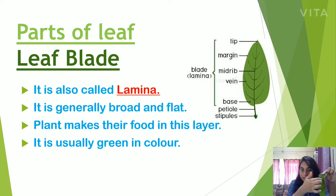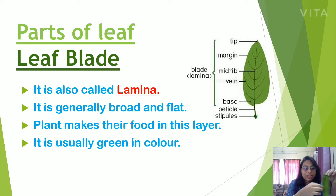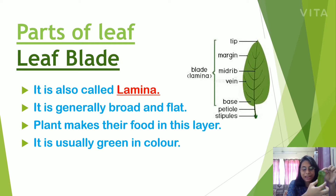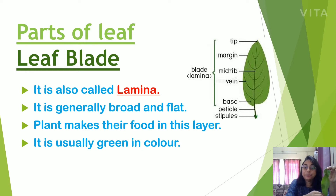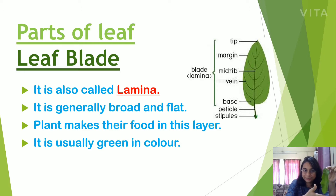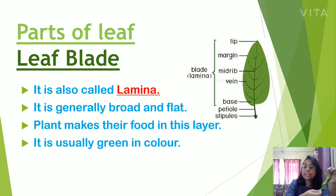I have a mango leaf with me. The broad and flat portion of the leaf is called the leaf plate or lamina. It is generally broad and flat. The plant makes its food in this layer, and it is usually green in color.